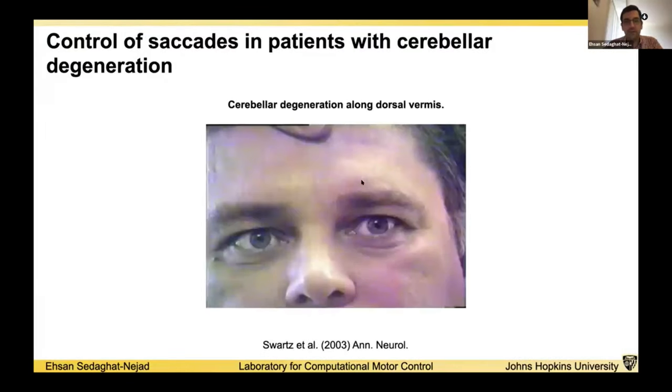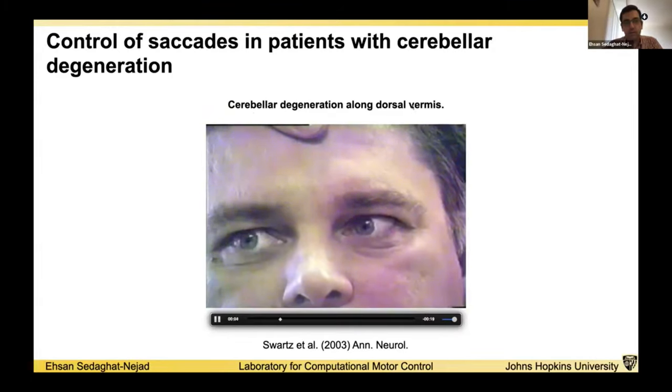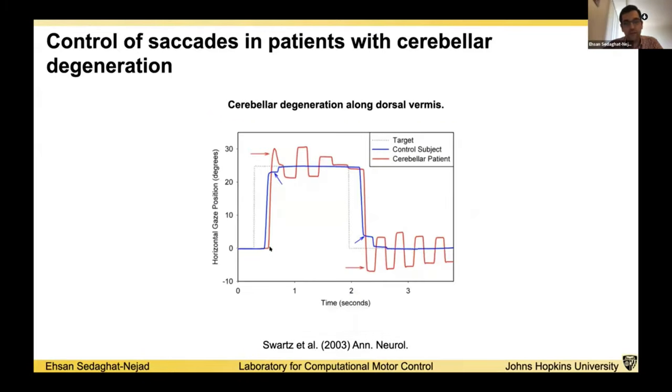Let's first start with sample patients that have cerebellar degeneration along the dorsal vermis. As you can see, at the end of the eye movements, there's this jittery extra movements. If you look at the traces of the eye movement, we can see that these patients indeed can initiate the movement, in this case eye movement, but they have difficulty controlling the endpoint accuracy of their movements.